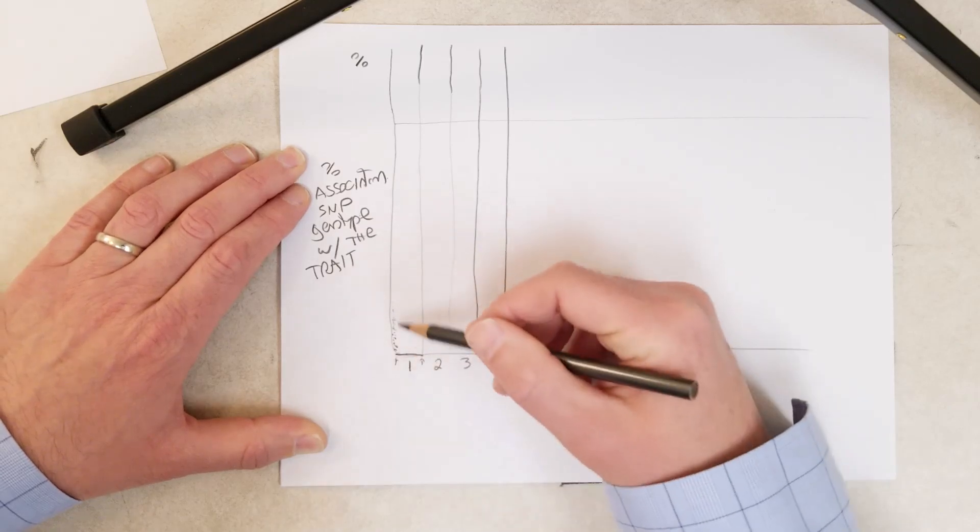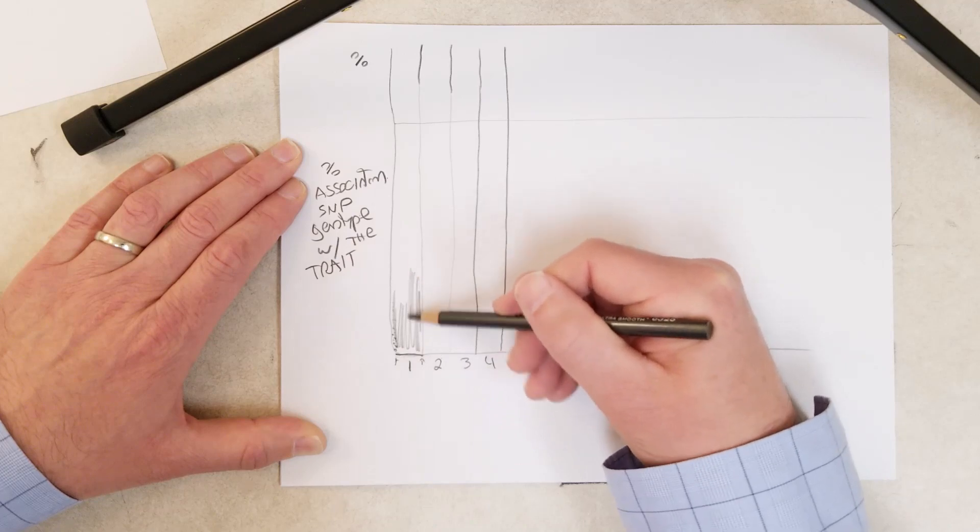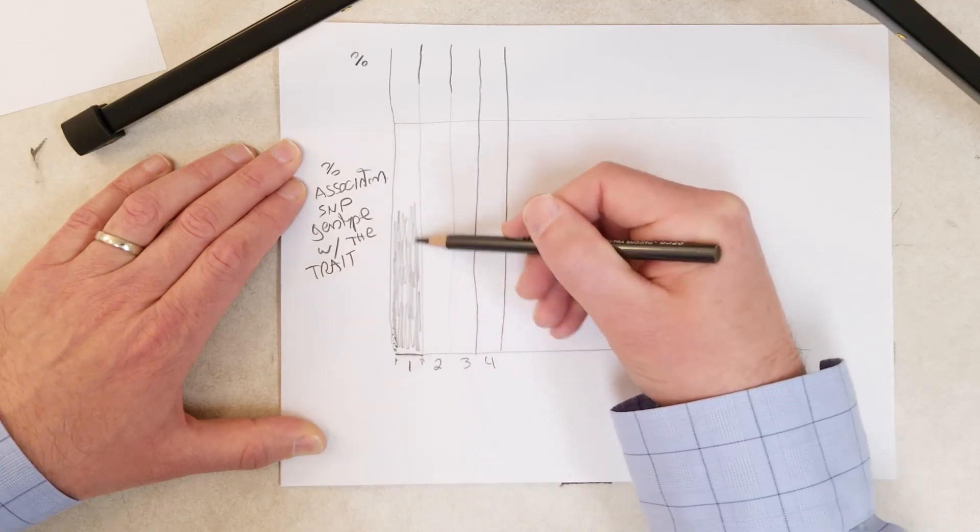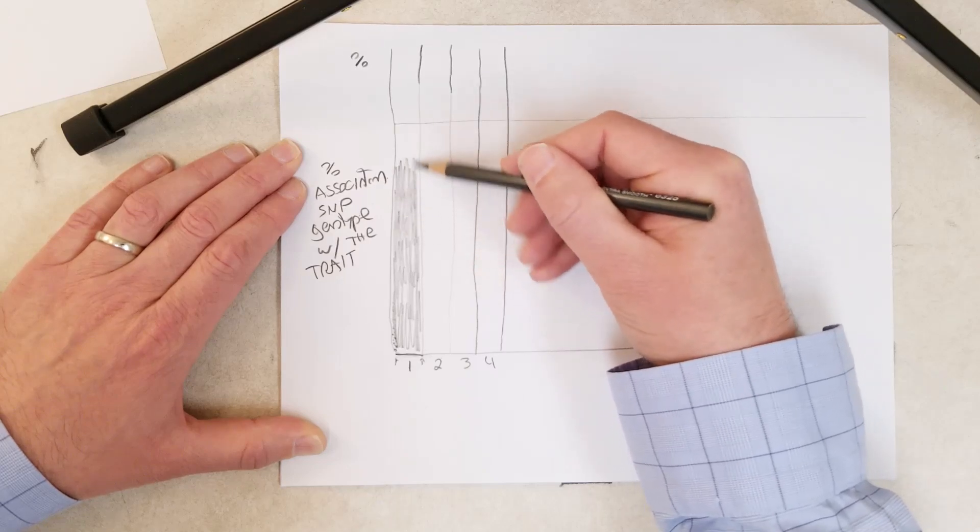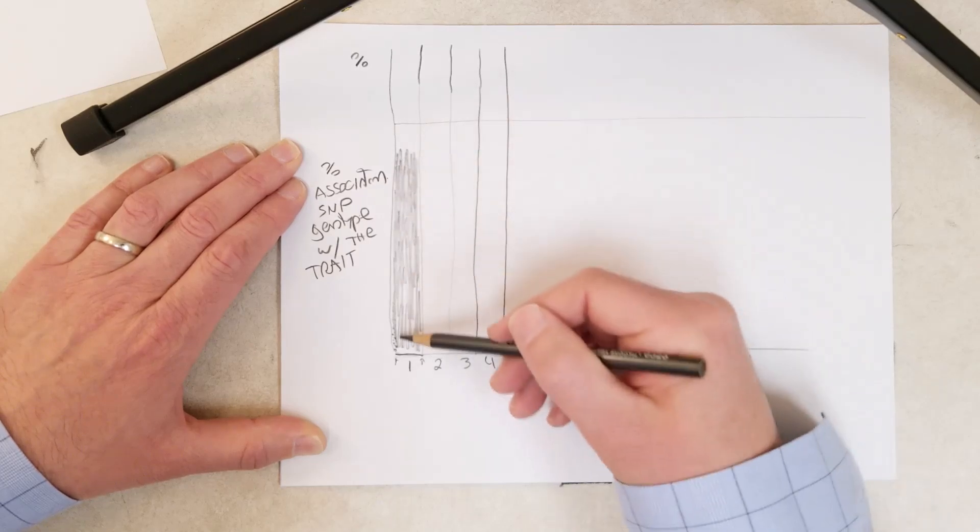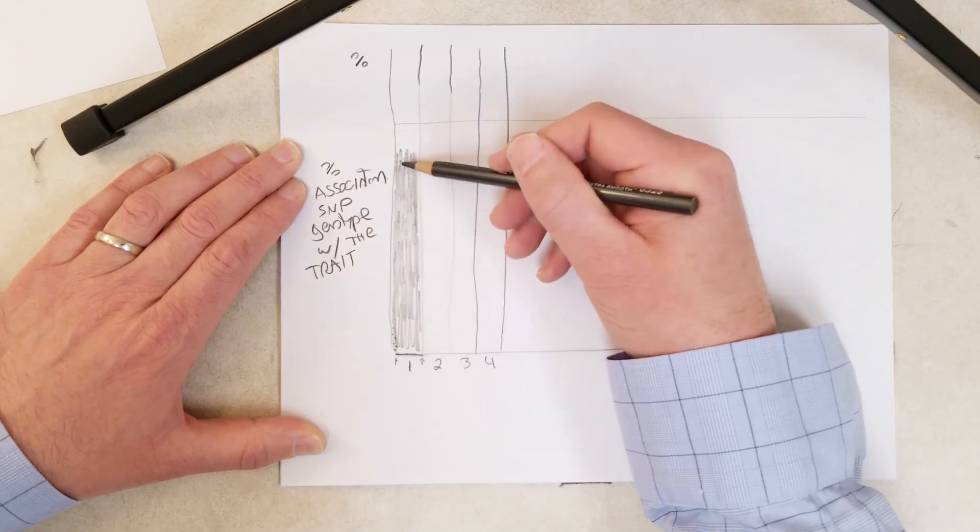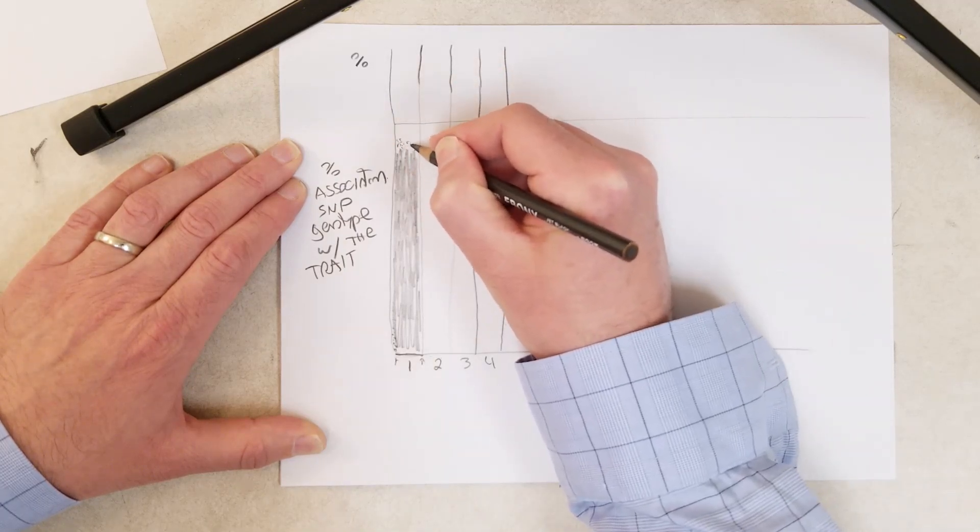You're squeezing all these points in here, and they're so close together. There's so many points that are not significant and not correlated with the trait that it looks like it's all filled in. Then up here you might get some individual points.